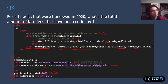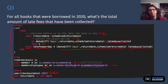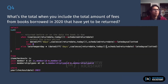That number of late days then multiplies by the late fee per day, giving me the total for that record. Since I'm summing everything up, this gives me the total fees collected based on books that were borrowed and returned late. Moving on to the last question.